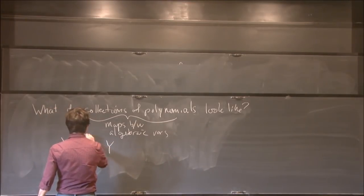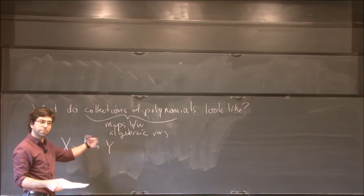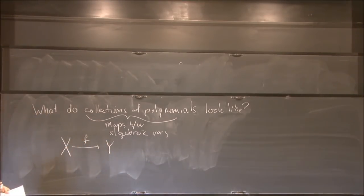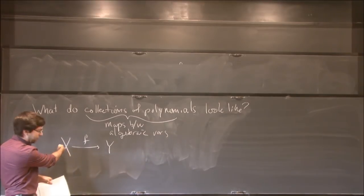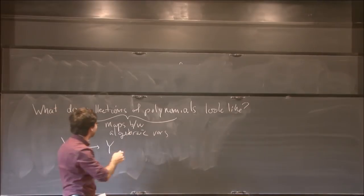Here, x and y, if you'd like, are complex manifolds, defined by collections of polynomial equations, and then f is a map between them, also defined by a collection of polynomials. So you take a point in x, you plug it into the polynomials, and you get a point in y. That's this part.